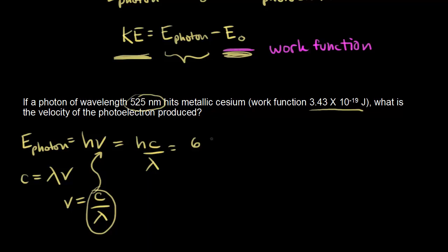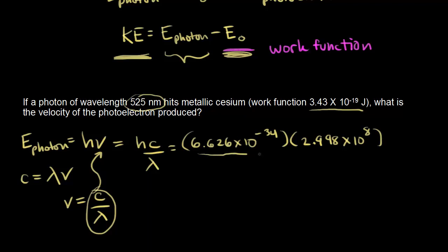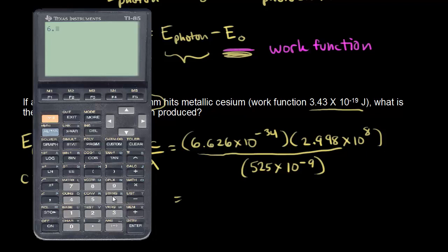We can plug in those numbers. H is Planck's constant: 6.626 times 10 to the negative 34. C is the speed of light: 2.998 times 10 to the eighth meters per second. And lambda is the wavelength: 525 times 10 to the negative 9 meters. Let's calculate the energy of the photon. We get 3.78 times 10 to the negative 19.